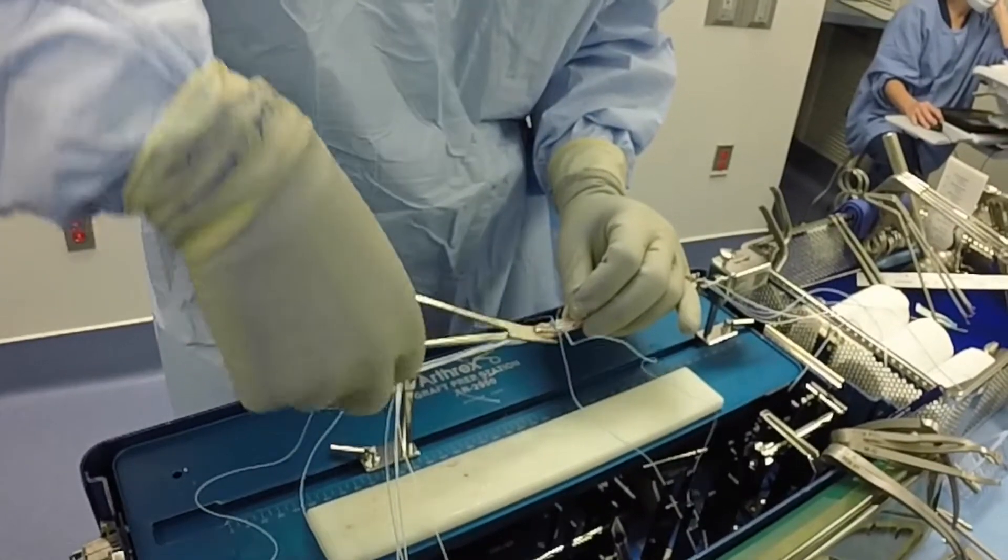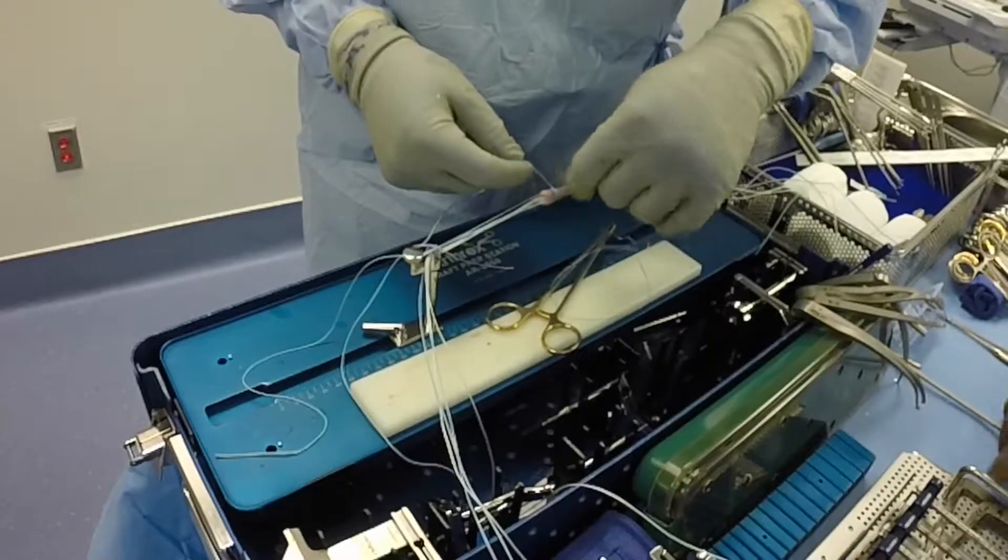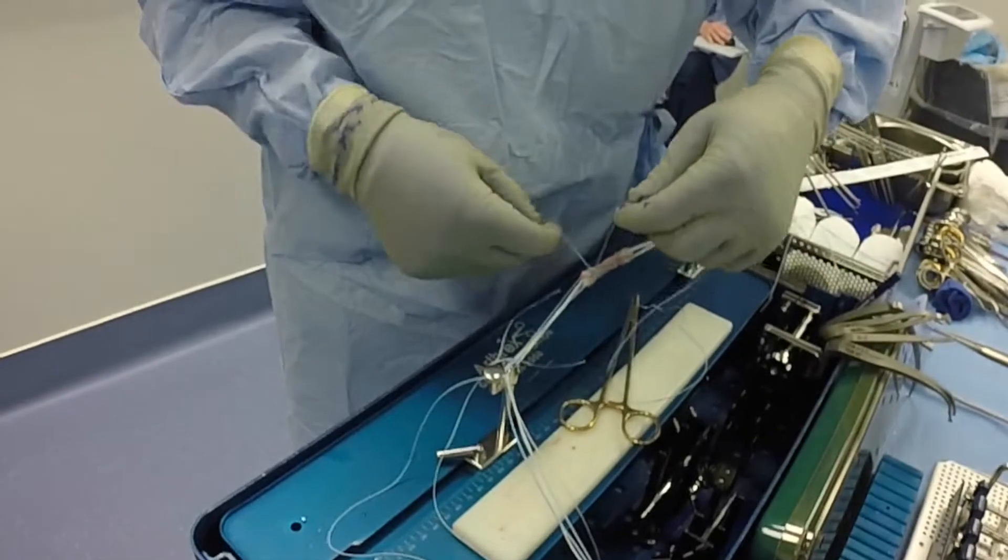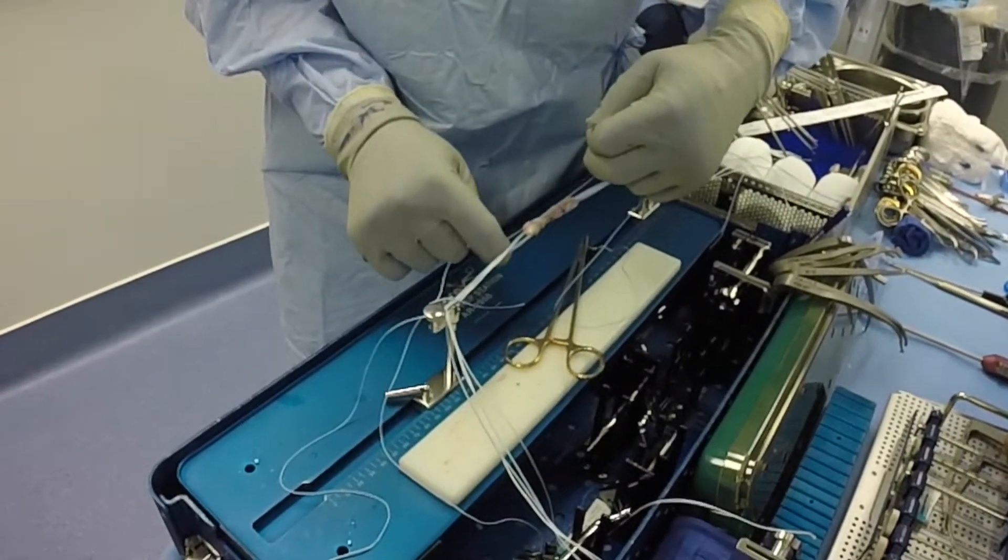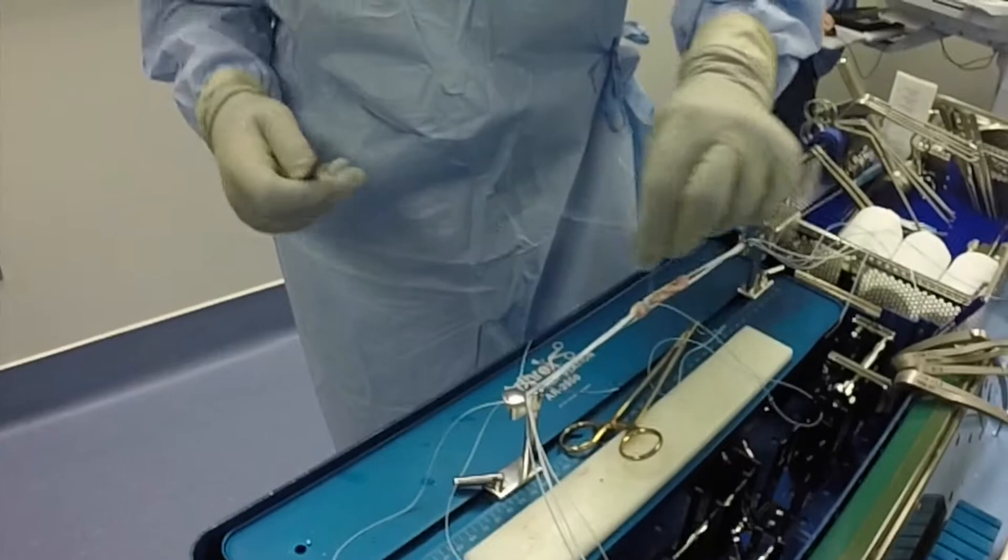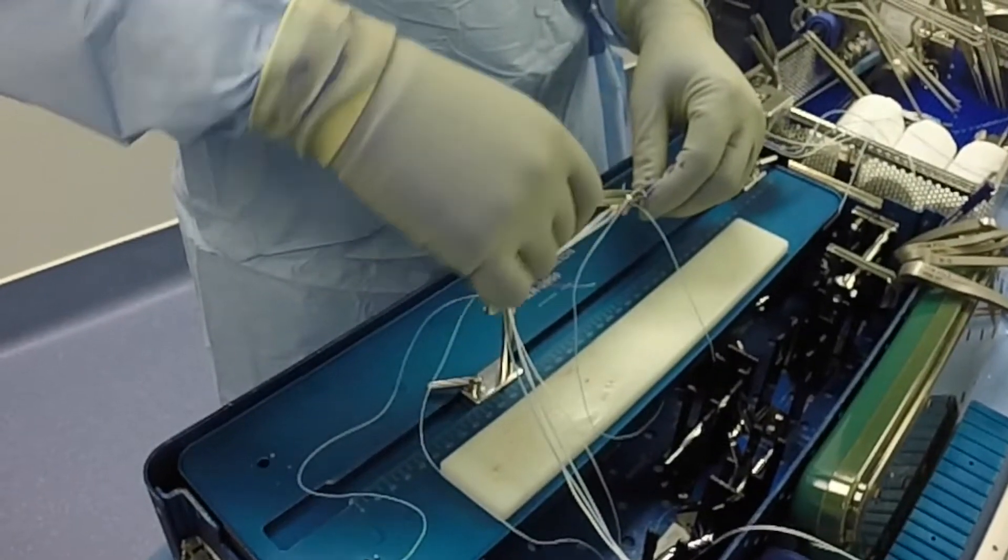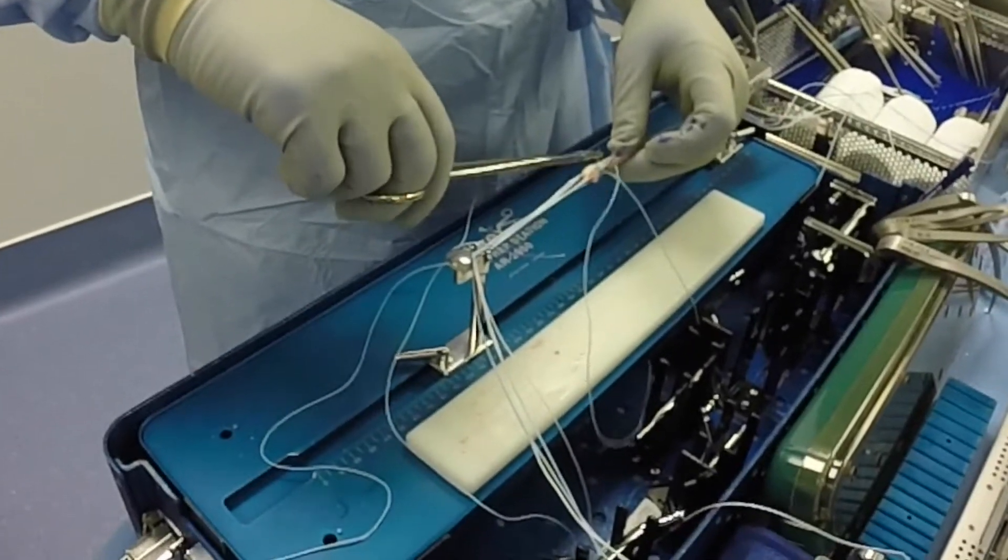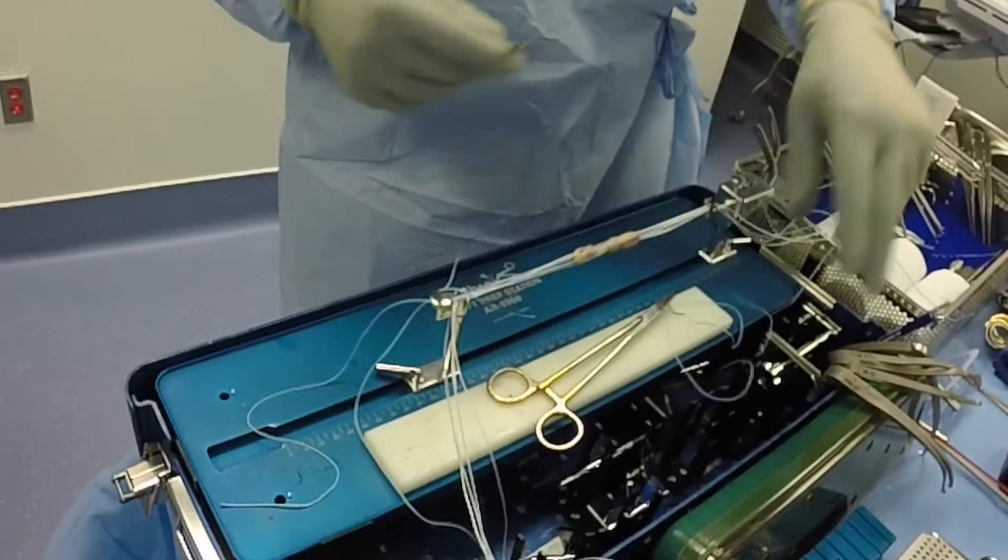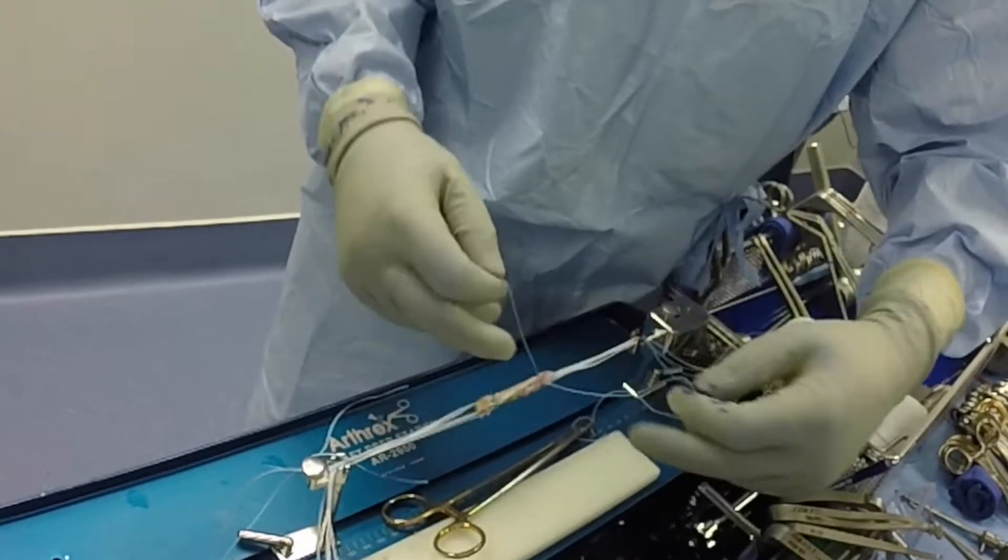And you can see the suture is tied within the central portion of the graft. One end of the suture cut, and then burying the other tail to pull the knot within the central portion of the graft. This is then repeated at the other end.